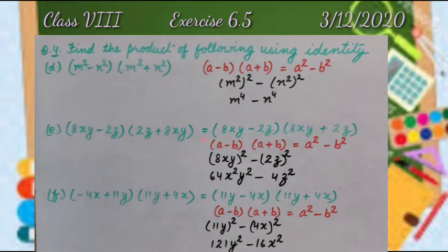A is 8xy, so (8xy)² minus b is 2z, so (2z)². Solving, we get 64x²y² - 4z².